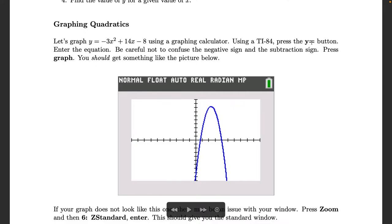You start by pressing the y equals button. This is available on the top left corner of your calculator and here's where you want to enter the equation. So let's go negative 3x squared plus 14x minus 8.